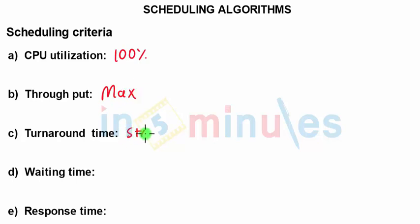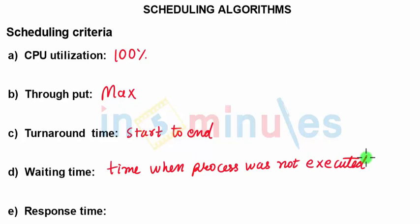Turnaround time is a time from start to end. Waiting period is time when process was not executed and response time is wait till first response or you can say run.